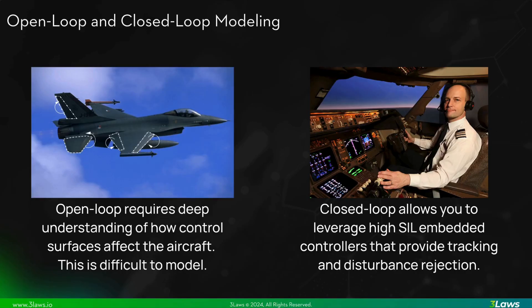To illustrate why it is beneficial to exist before the embedded control layer, consider the difference between open loop and closed loop modeling of the system dynamics. Open loop modeling requires a deep understanding of how the control surfaces affect the motion of the aircraft, and is highly dependent on environmental factors like altitude and wind conditions, resulting in a significant modeling challenge. Closed loop modeling, on the other hand, allows you to leverage the existing high safety integrity level embedded controllers that were designed to track reference signals provided by the pilots. These often include disturbance rejection and stability guarantees that can be leveraged to simplify modeling and safety case generation.